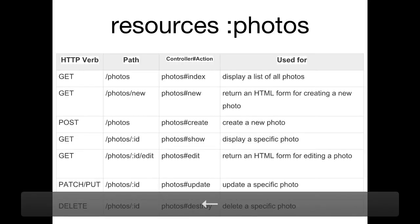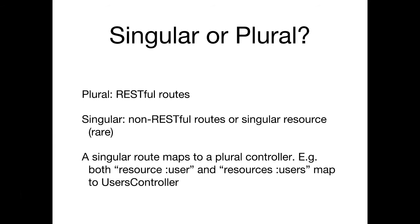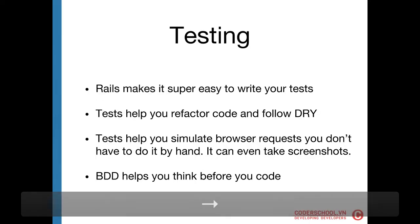There is also a singular resource — 'resource :photo' without the s. It means you cannot have an index action since that gives you a list, and show doesn't have an id. You might use this for the current logged-in user — going to /user/edit is singular because you know what user it is from the session. But my advice: don't ever do it. It's very confusing. Just use 'resources' with plural and keep your routes consistent. So we're done with routes — let's move to testing.